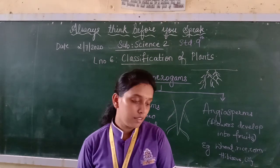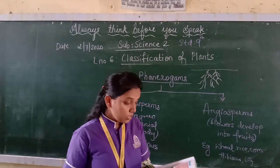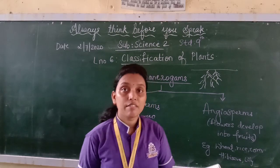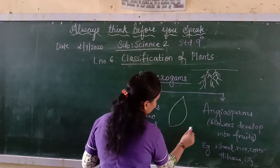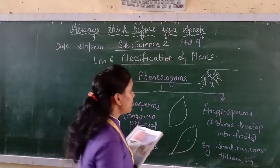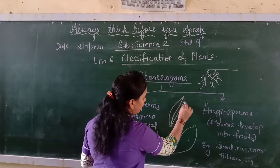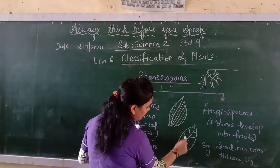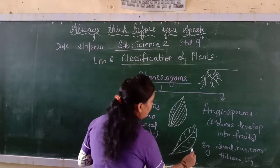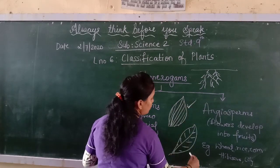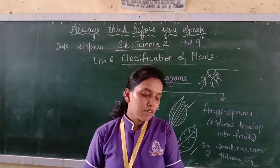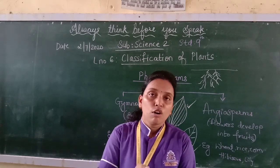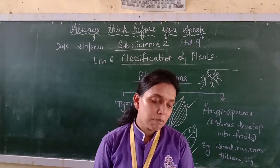For leaf venation, dicotyledonous plants have reticulate venation — where veins form a net-like pattern — while monocotyledonous plants have parallel venation, where veins run straight. You can observe this on leaves at home. For flowers, dicotyledonous plants have parts in multiples of 4 or 5 — they are tetramerous or pentamerous — while monocotyledonous flowers have parts in multiples of 3.